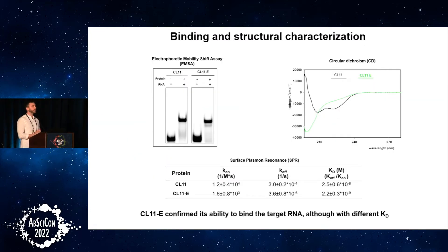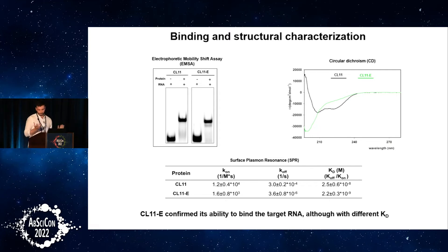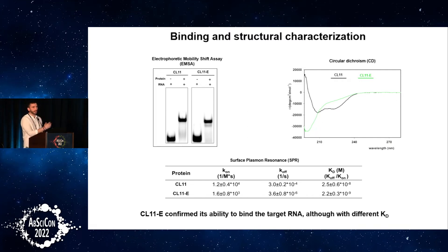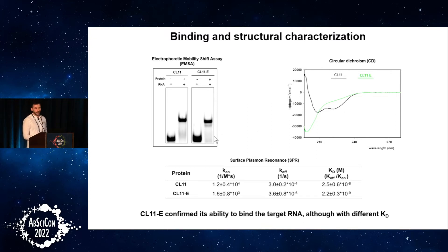After selecting our variant, we needed to prove it. We expressed it in E. coli, purified it, and verified binding in comparison to the wild-type protein using EMSA — electrophoretic mobility shift assay — loading on a native PAGE gel the free RNA and the RNA-protein complex. We observed that the E-variant compared to wild-type shows the same binding; at least, it binds. Then we checked the structure: the E-variant has lost completely the secondary structure compared to the wild-type, which was mostly alpha-helical. The E-variant shows a peak around 200 nm in circular dichroism, indicating it is highly disordered.